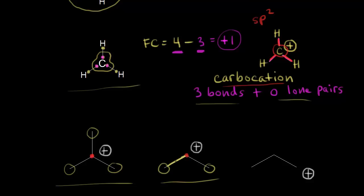Looking at the next carbocation, the carbon in red is bonded to a CH3 group on the left and a CH3 group on the right. We only have two bonds here, but for a plus one formal charge we need three bonds, like the example on the left. The last bond must be to a hydrogen, so we draw it in. Usually you leave off your hydrogens when making these drawings, but it's important to understand what's actually there.